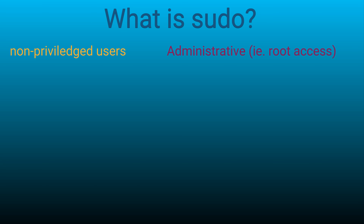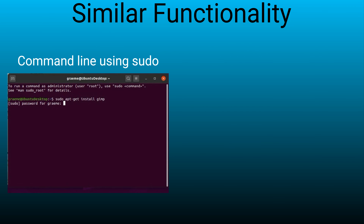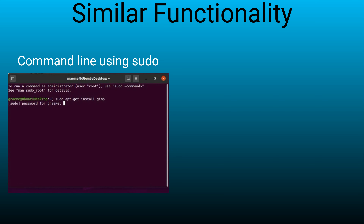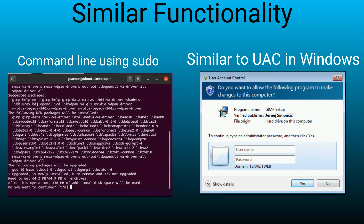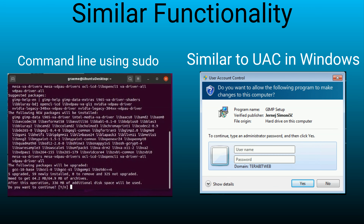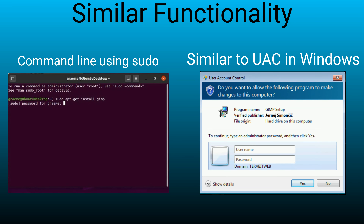sudo is a command that can allow certain users to perform administrative functions of the operating system in Linux, Unix, and Apple's OS X. The example on the left is sudo used to install the graphic image editor called GIMP using the command line in Ubuntu Linux. sudo is like user account control, or UAC in Windows, to ask to escalate privileges to install programs and modify the operating system or modify other users' files.